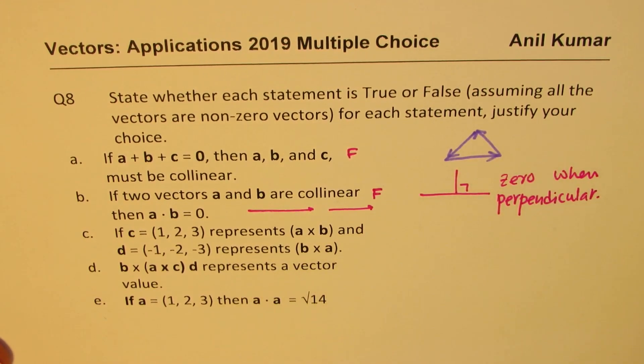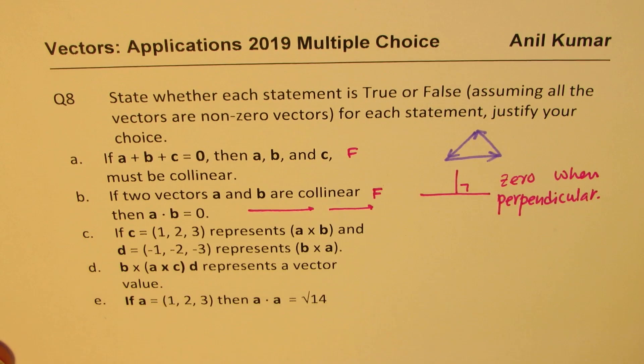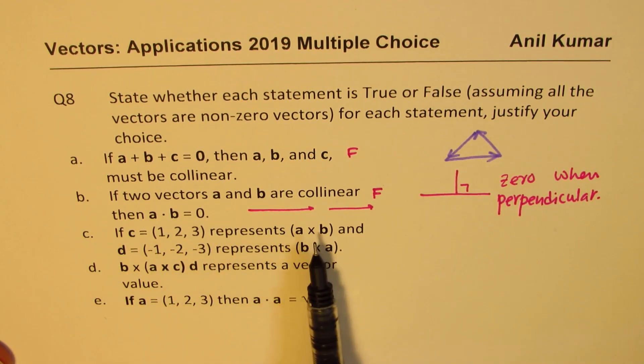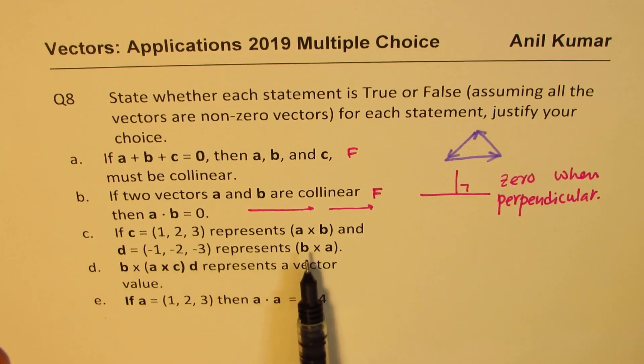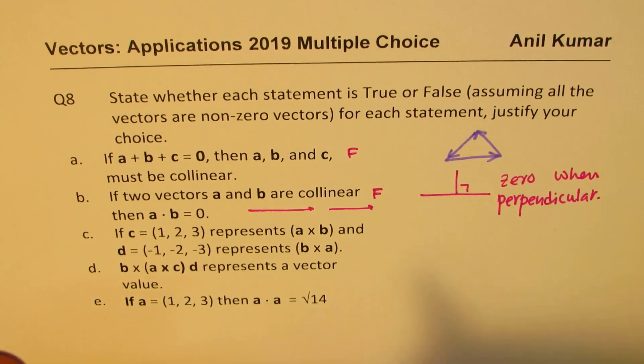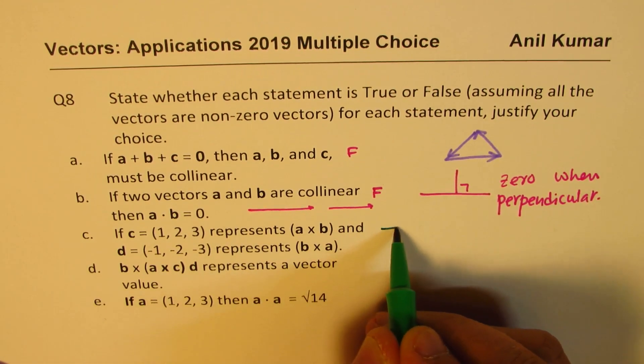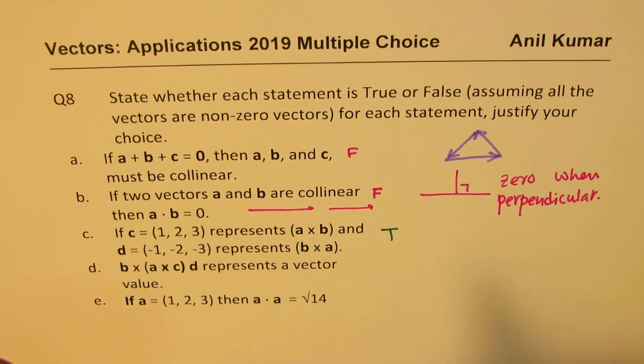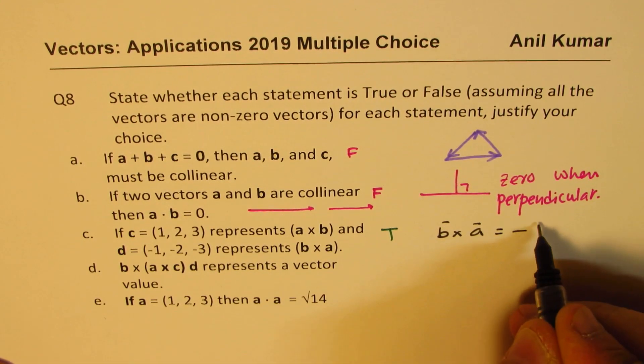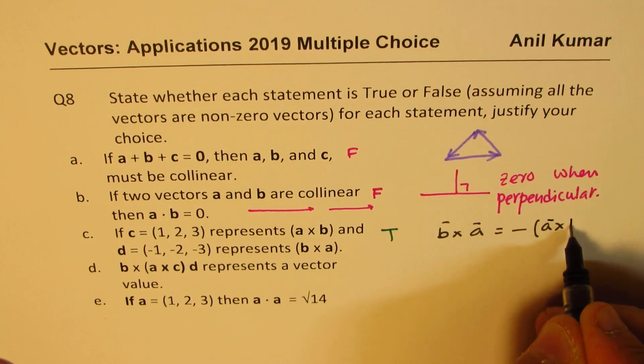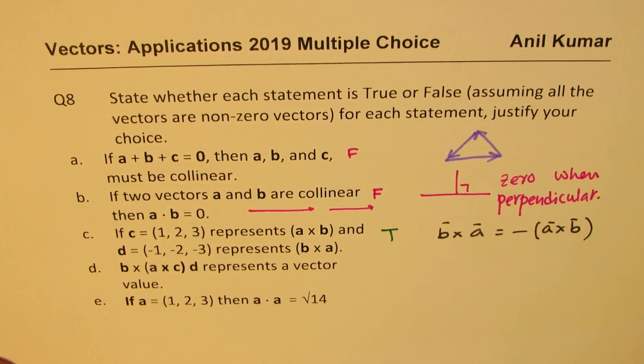If C equals (1, 2, 3) represents A cross B, and D is negative of this represents B cross A, that is true. Because A cross B and B cross A, they are negative of one another. So that is true, because B cross A is equal to negative of A cross B. Therefore, it is true.